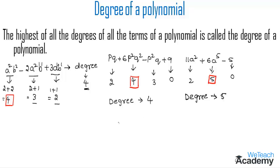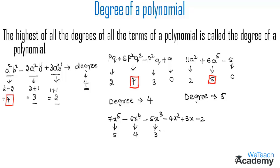Now let us consider another example. We have the polynomial 7x to the power 5 minus 6x to the power 4 minus 5x cubed minus 4x squared plus 3x minus 2. The degrees of each term are 5, 4, 3, 2, 1, and 0 respectively. The highest degree is 5, so the degree of this polynomial is 5.